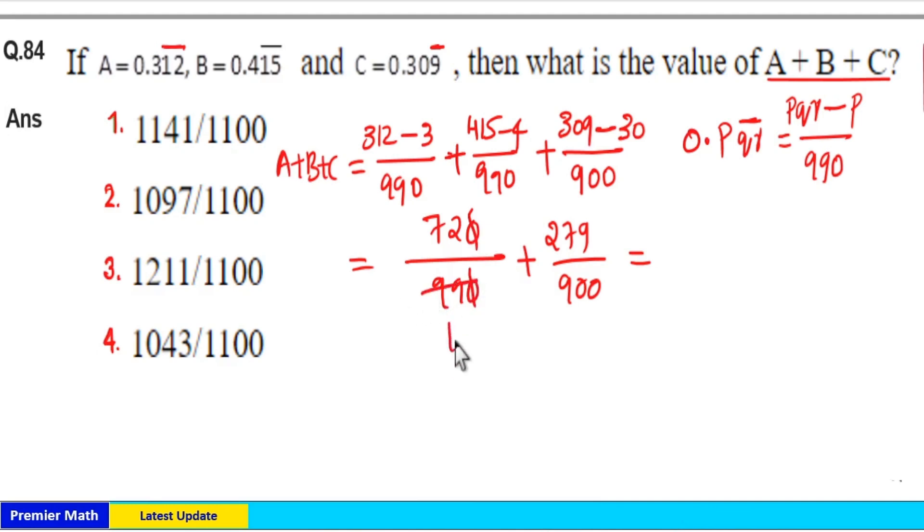9 goes 11 times in 99. 8 times in 72. 100 times in 900. And 31 times in 279. Here take 1100 as LCM. And 11 goes 100 times in 1100 means this is 800. 100 goes 11 times in 1100. So 11 into 31 is equal to 341. Now this is equal to 1141 divided by 1100. Option 1 is your answer.